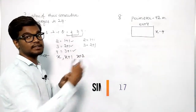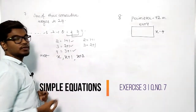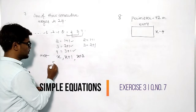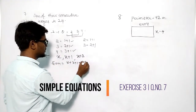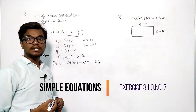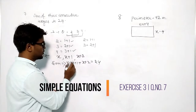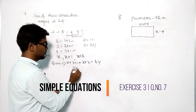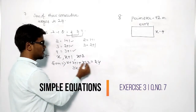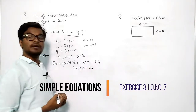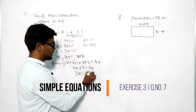So we take the three consecutive integers as x, x plus one, and x plus two. Their sum will be equal to 24: x plus (x plus 1) plus (x plus 2) equals 24. There are three x's, so that gives 3x. And one plus two equals three, so we get 3x plus 3 equals 24.